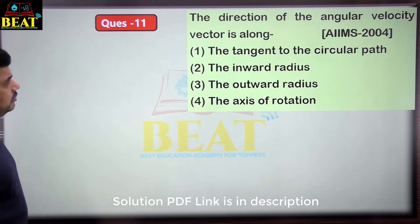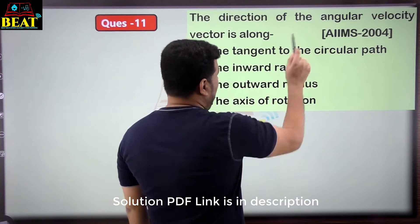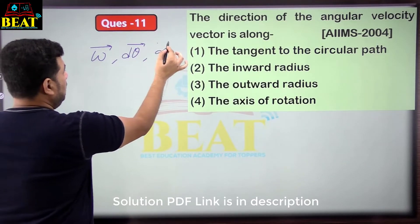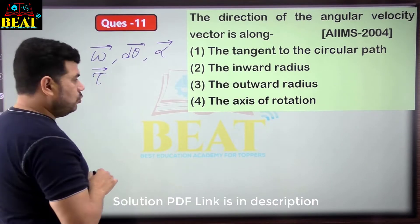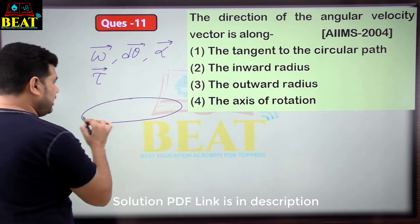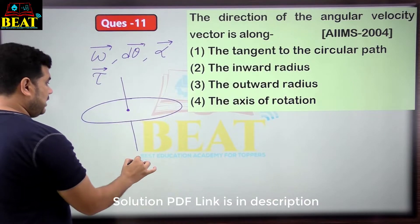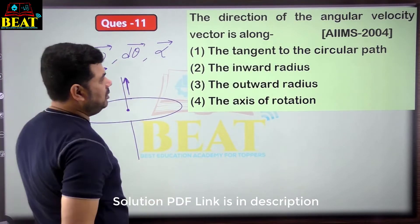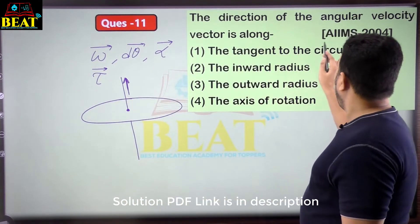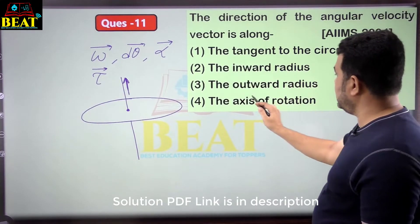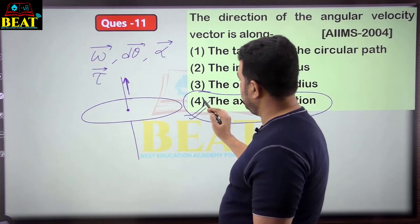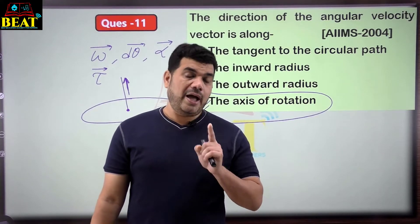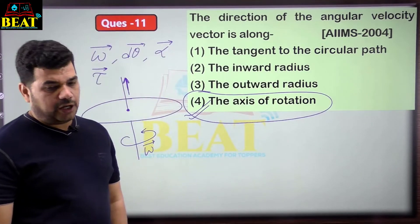Question 11: direction of angular velocity vector is along — angular velocity, angular displacement, angular acceleration, torque — these are all axial vectors. An axial vector lies along the axis of a circle. All the listed quantities are axial vectors, always along the axis of rotation. Correct answer: axis of rotation.